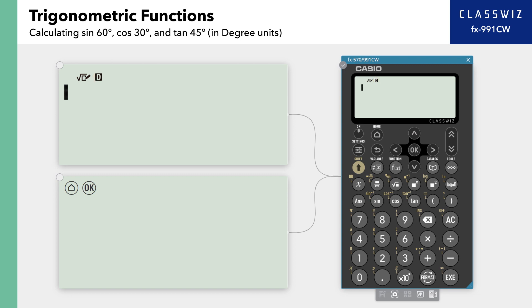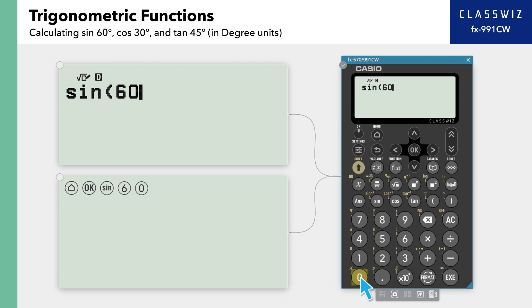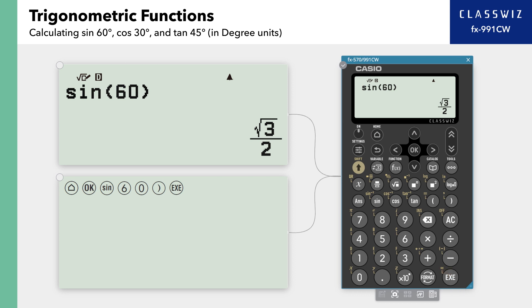First, let's calculate sine 60 degrees. Enter sine, 6, 0, and closing parenthesis. Then press Execute to find a result of square root of 3 over 2.